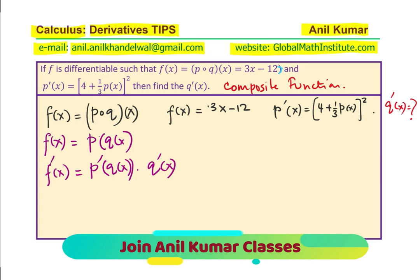Now, we can find the derivative of the outside function, which is also given to us as 3x - 12. From here, we know what is f'(x). It is equal to 3. We can substitute this value of 3 here.